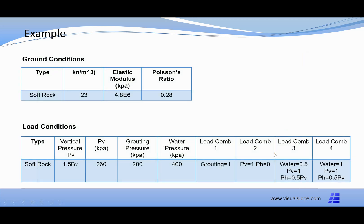The ground conditions are as follows. Soil type is soft rock, density is 23, elastic modulus is 4.8 × 10^6, and Poisson's ratio is 0.28.